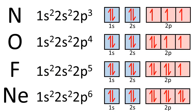The electron configurations of nitrogen, oxygen, fluorine, and neon are shown here along with their corresponding orbital diagrams. Notice that in the case of nitrogen and oxygen, Hund's rule is used to correctly portray the number of paired and unpaired electrons in each of the 2p orbitals.